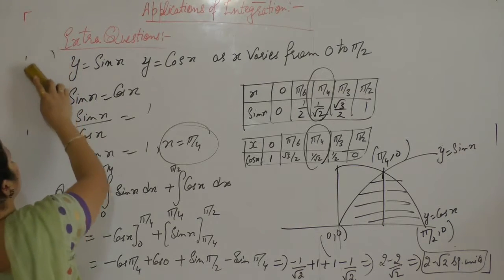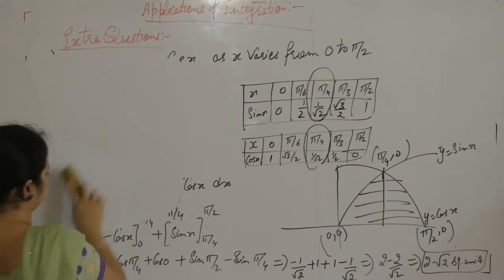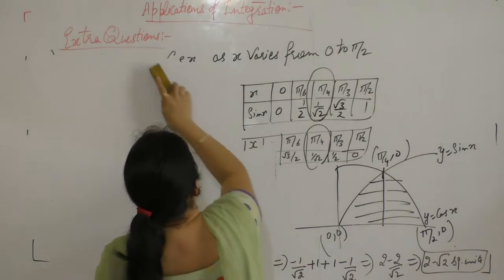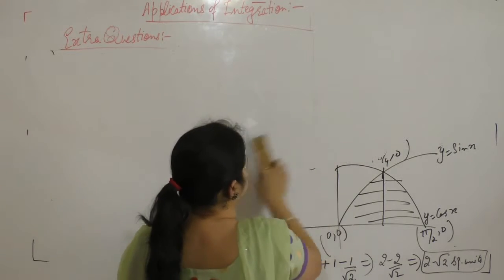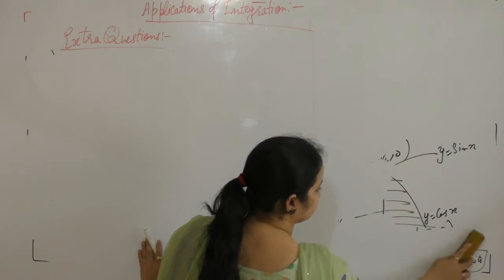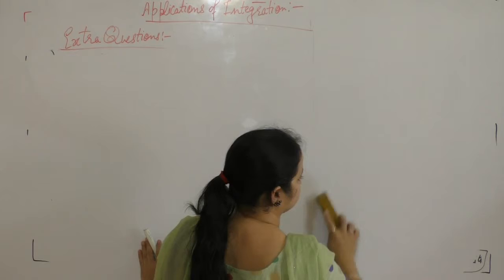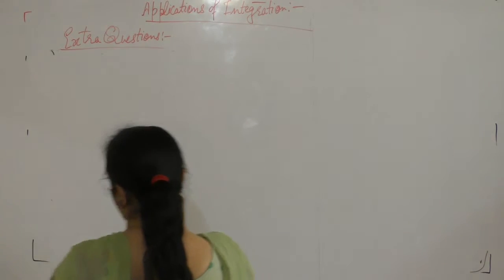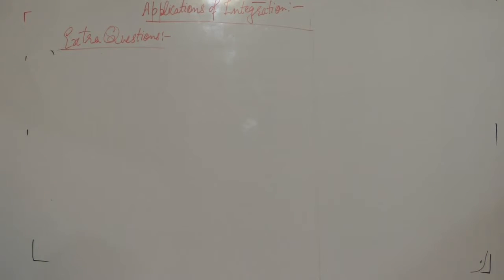Now the next one is 1 minus square root of 2, 2 minus square root of 2, and 3 minus 1, 1 minus square root of 2. Question number 8.